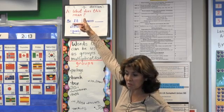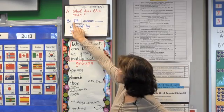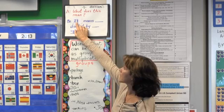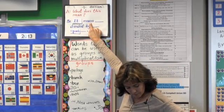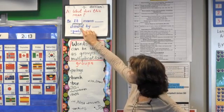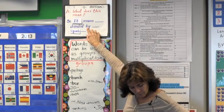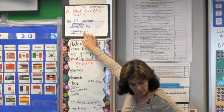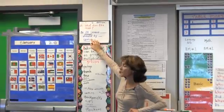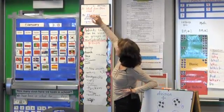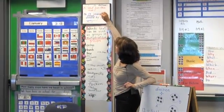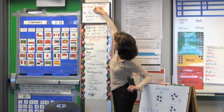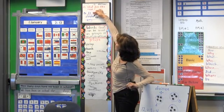It means — will it be the same? Let's practice with it. Ready? Go. It means twelve divided by three equals four. This means twelve divided by three equals four.